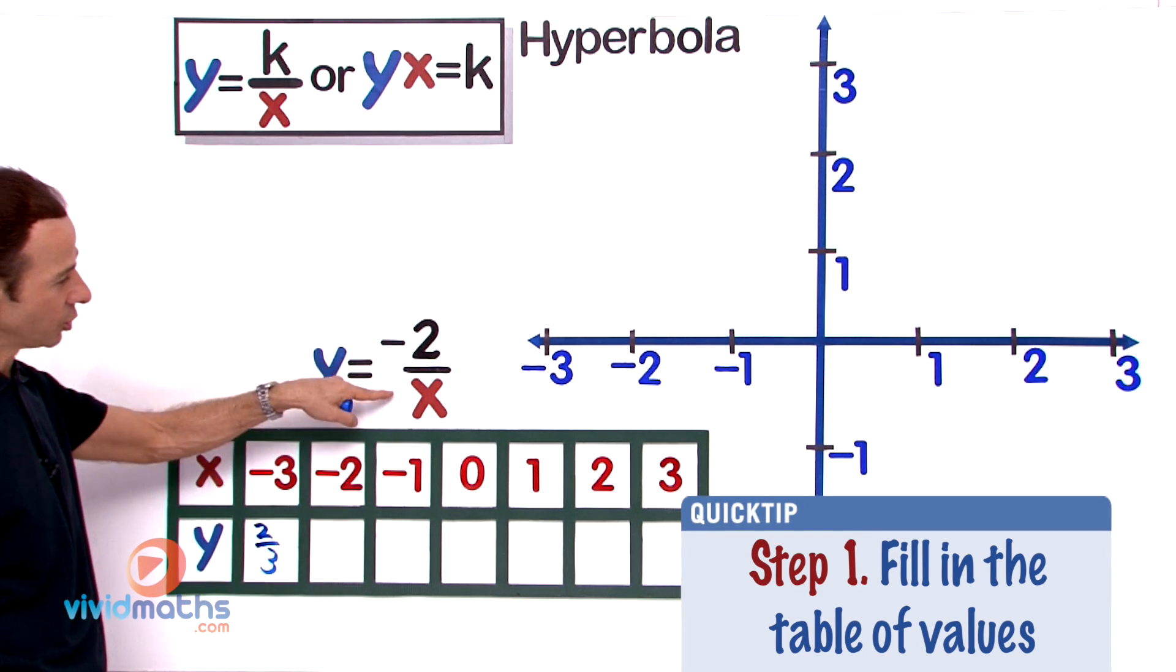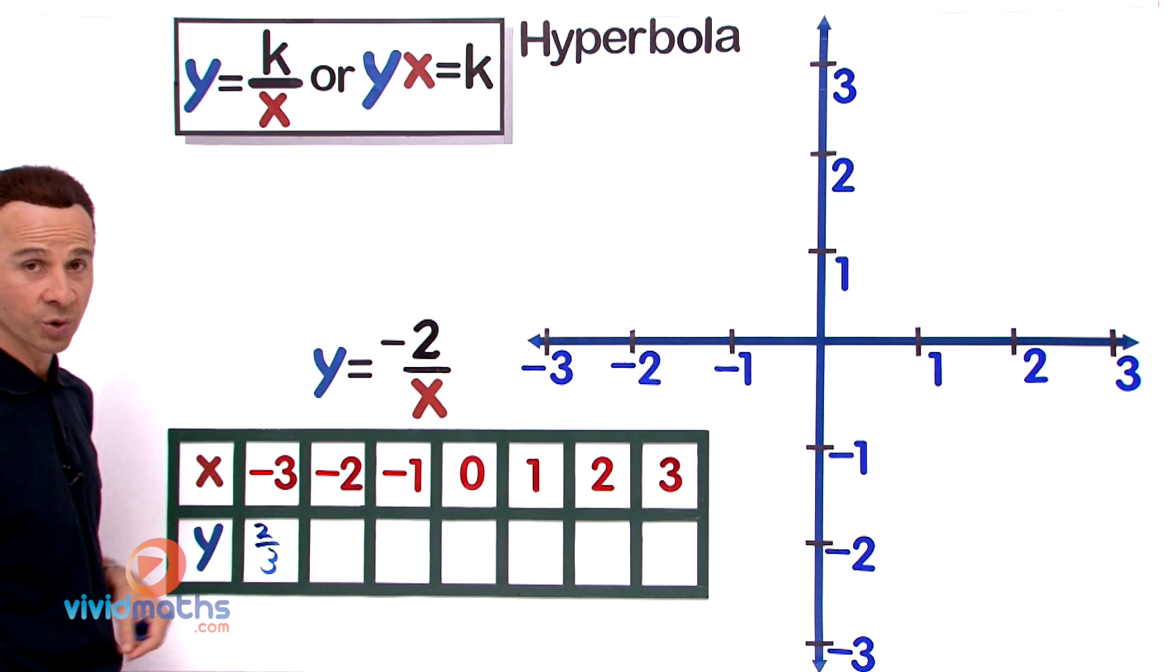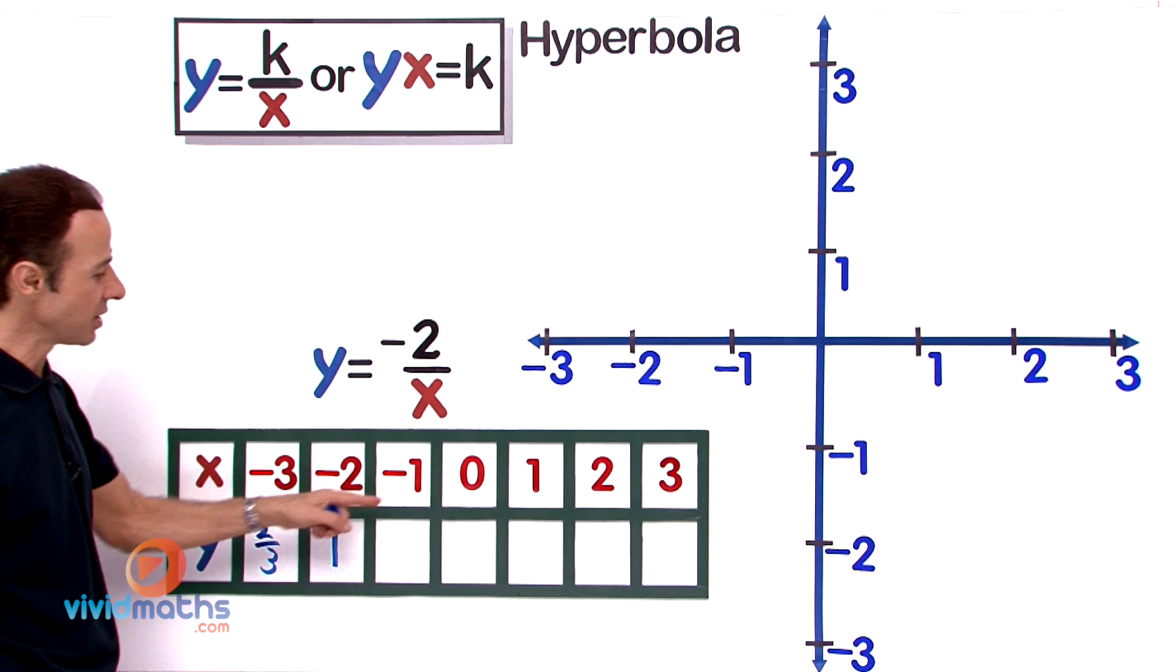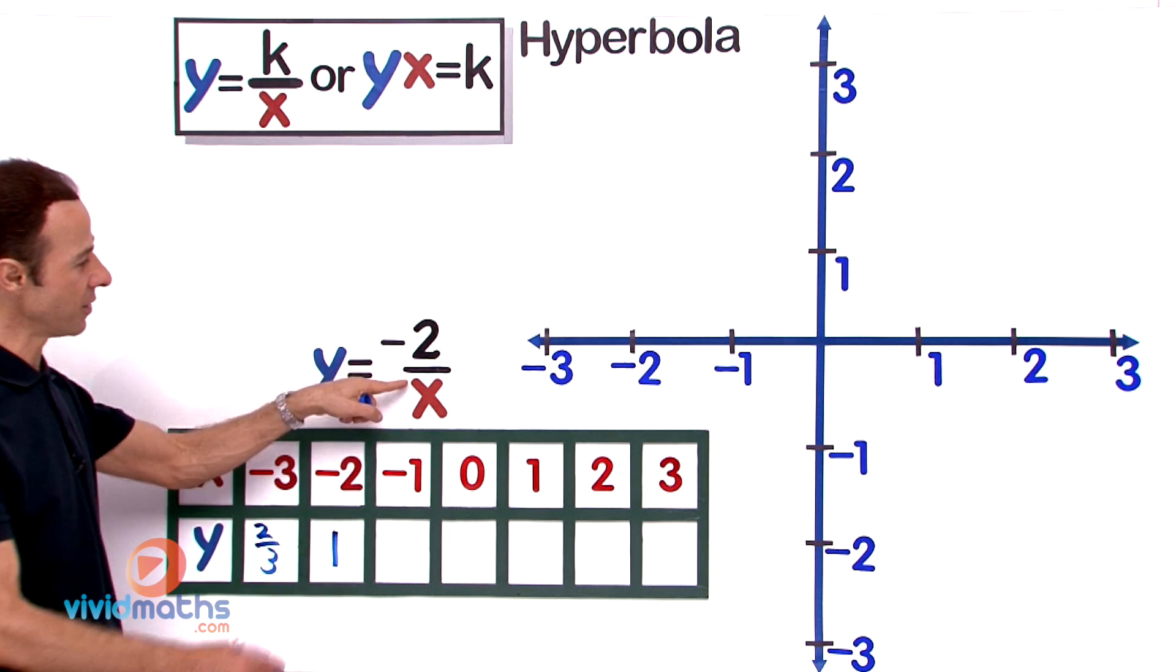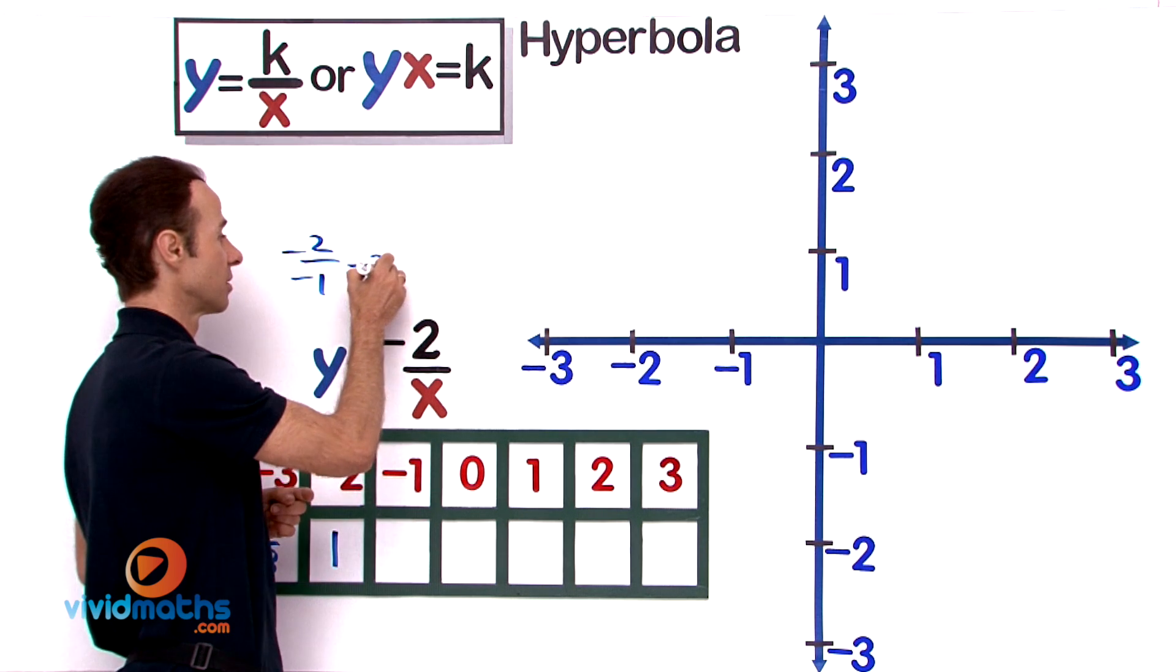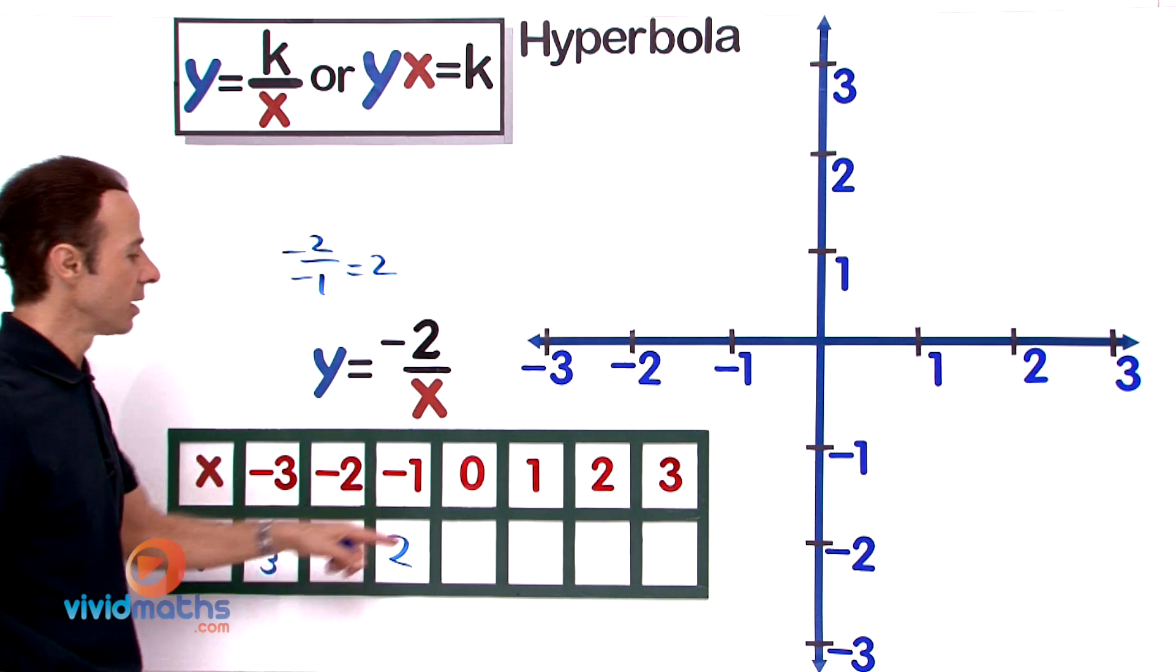The next one is negative 2 over negative 2—negative 2 over negative 2 is a positive 1. Then we're going to have a negative 1 on the denominator, so if you've got negative 2 over negative 1, that's going to be a positive 2. Let's put that in: 2.